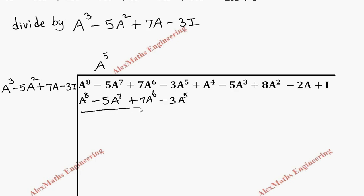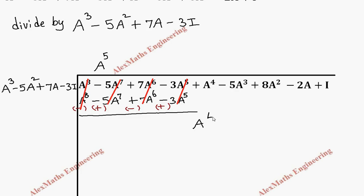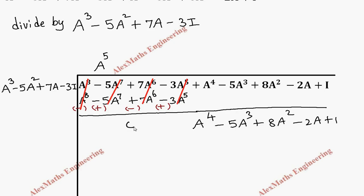We subtract this from the dividend — changing signs of all second terms for subtraction. A⁸ minus A⁸, minus 5A⁷ plus 5A⁷, 7A⁶ minus 7A⁶, and minus 3A⁵ plus 3A⁵ all cancel. We are left with: A power 4 minus 5A cubed plus 8A squared minus 2A plus 1.